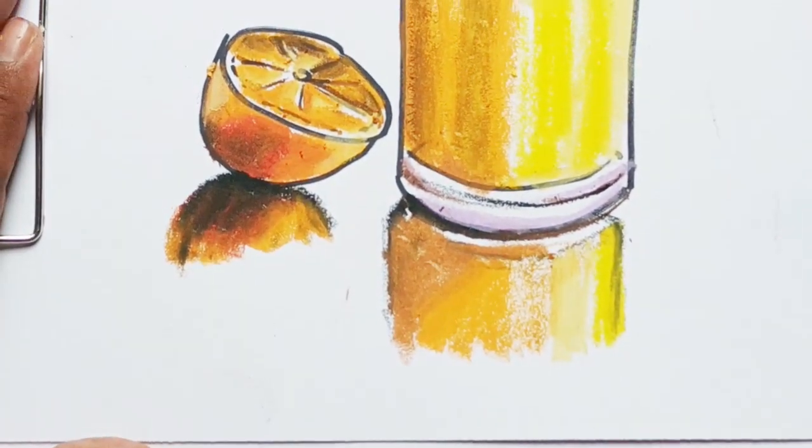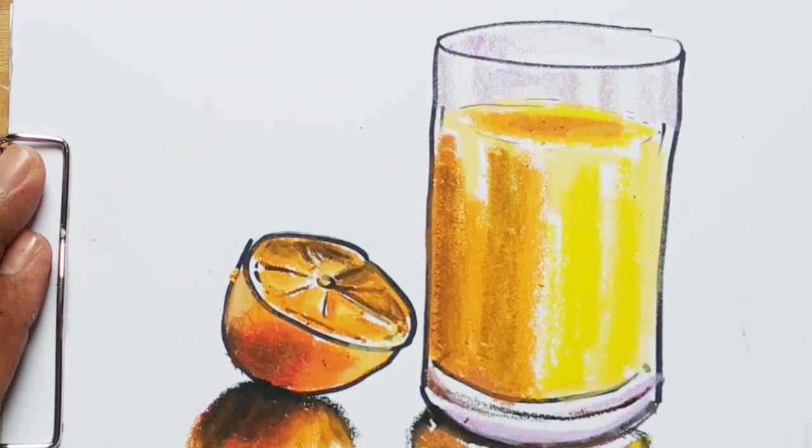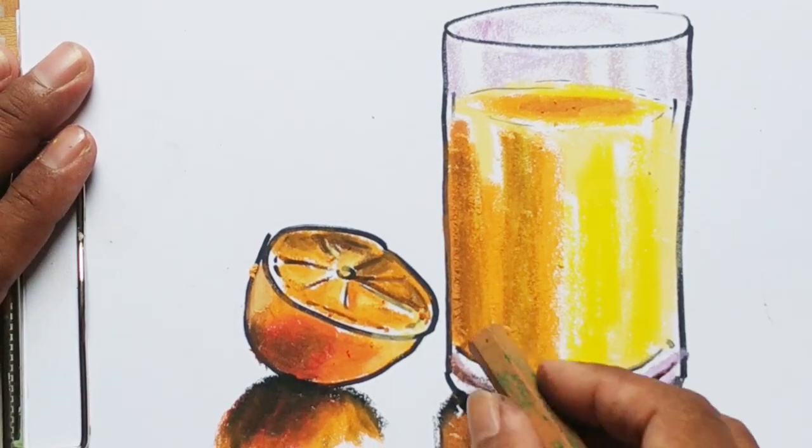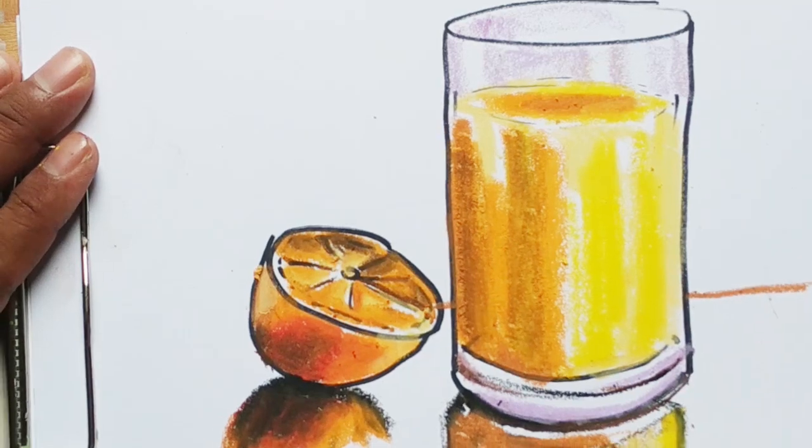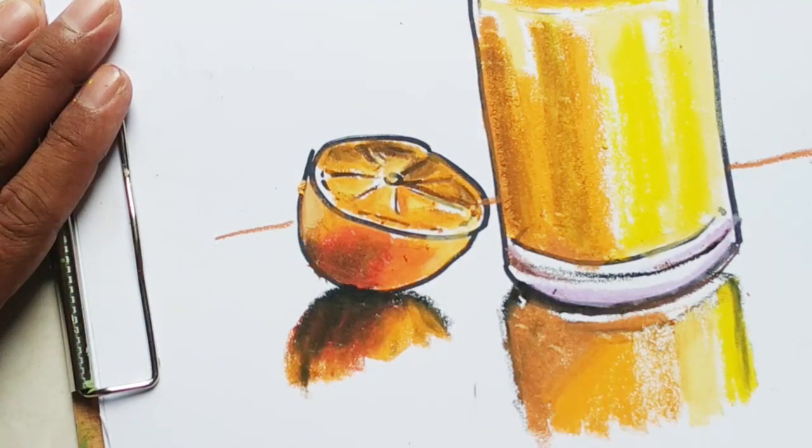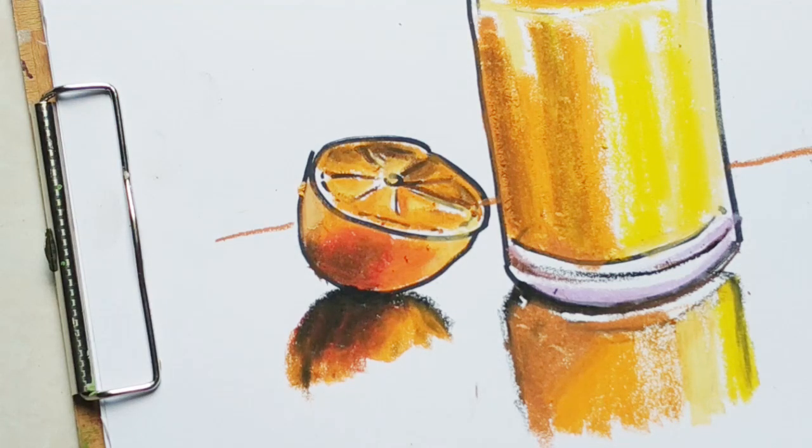That's the reflection. And the table - what about the table? I'm going to draw this line here, like this. And also here. And I'm going to use paint for that.